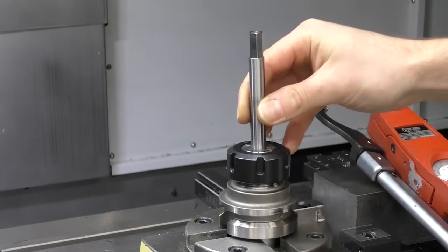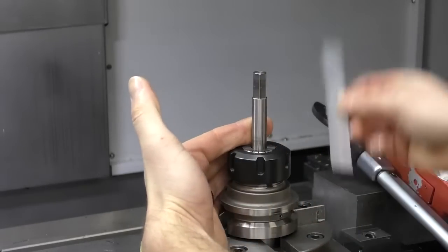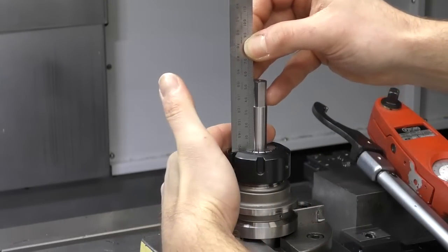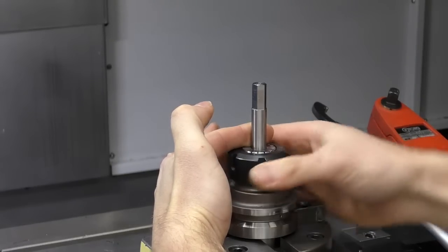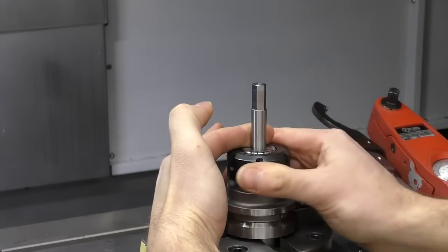So what I'm about to show is a very simple way of testing a tool holder's gripping force. First up with the ER32 collet chuck. So I've inserted the test bar into the collet and I've set the stick out to 50 millimeters.